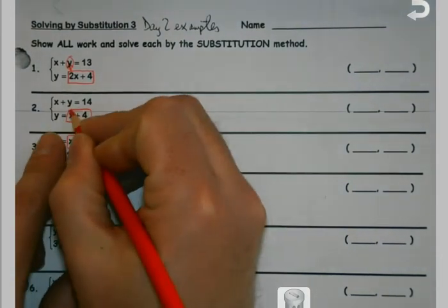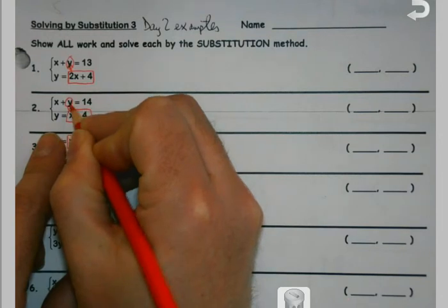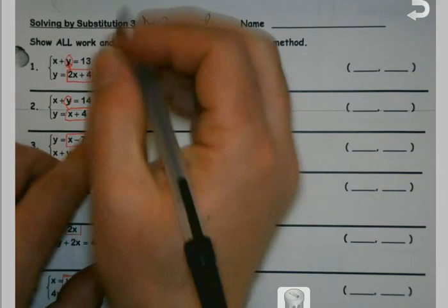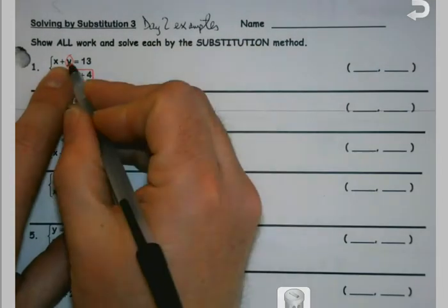Or on number two, it says y equals. I'm going to take this, and I'm going to replace y with what's in the box. And so on. So my first step is always going to be, so I'm plugging this into here.